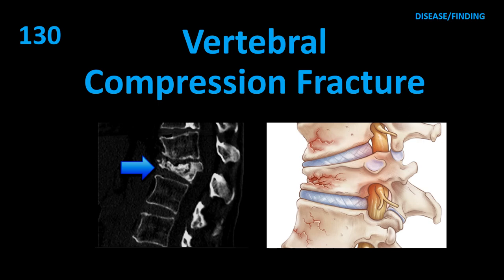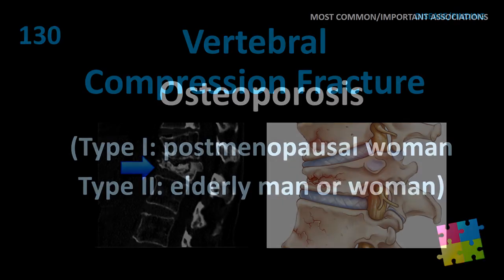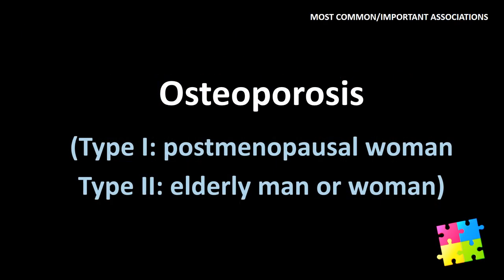Item 130: Vertebral compression fracture — osteoporosis: type 1 in postmenopausal women, type 2 in elderly men or women.